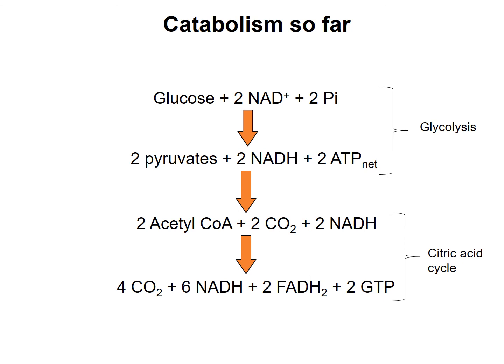In summary of catabolism so far: in glycolysis, there is a net production of 2 NADH and 2 ATP per glucose molecule. In the Krebs cycle, there is the production of 6 NADH, 2 FADH2, and 2 GDP per glucose molecule. The rest of the ATPs will be covered in the next lecture on the electron transport chain.